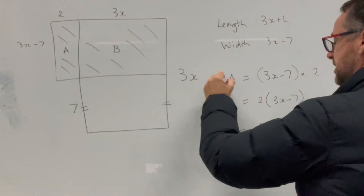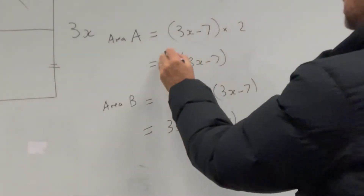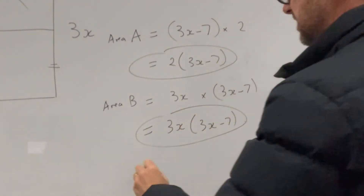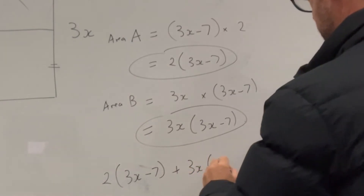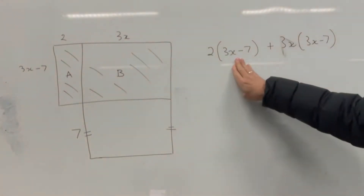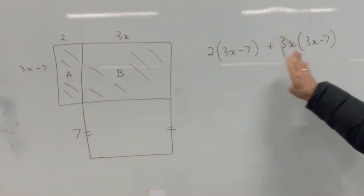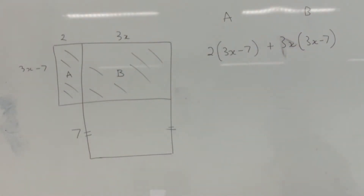That's the area of B and that's the area of A. Now write an expression for the total shaded area — add those together and expand and simplify. So it's 2(3x minus 7) plus 3x(3x minus 7). First we need to expand our brackets, and then once we've done that we collect like terms and simplify.